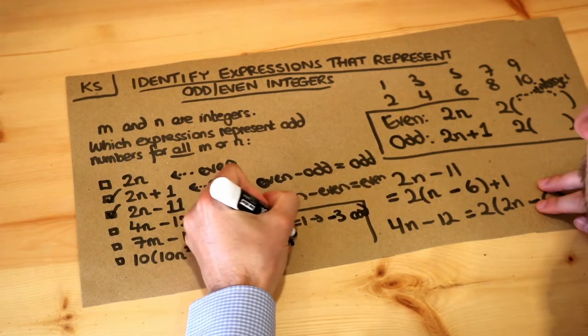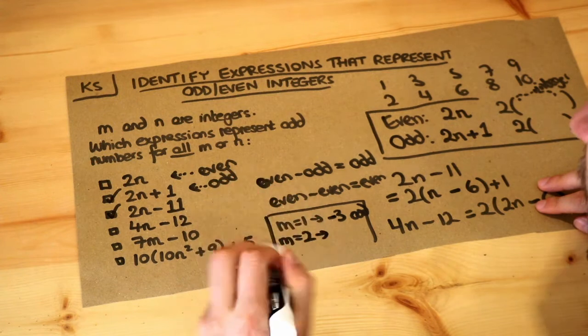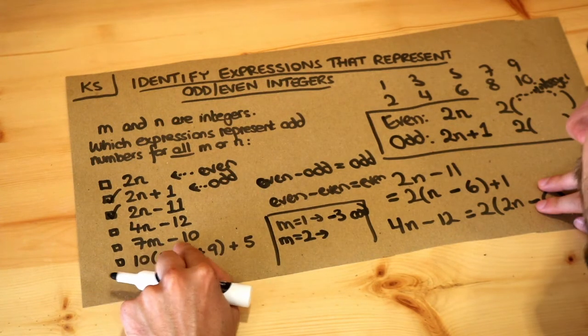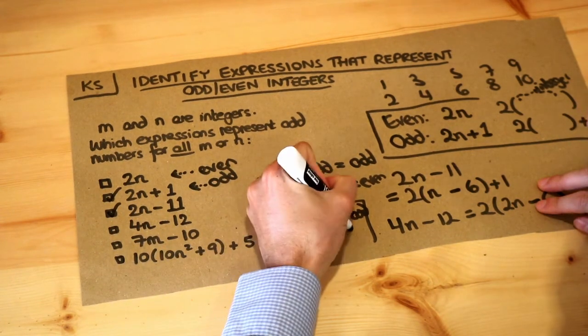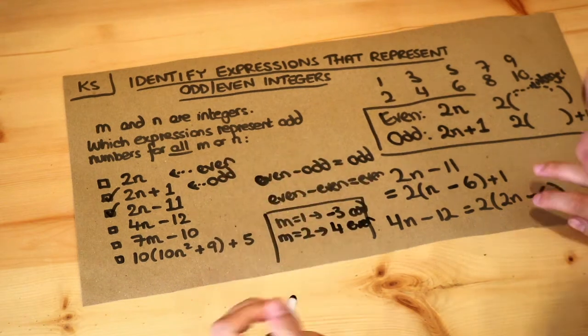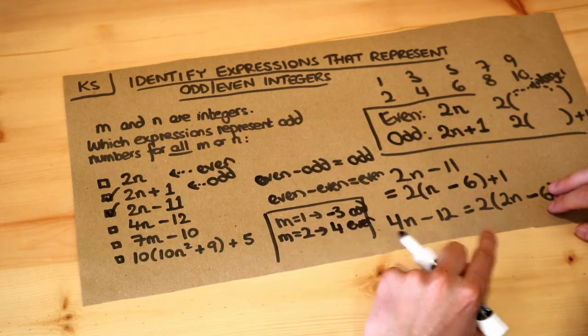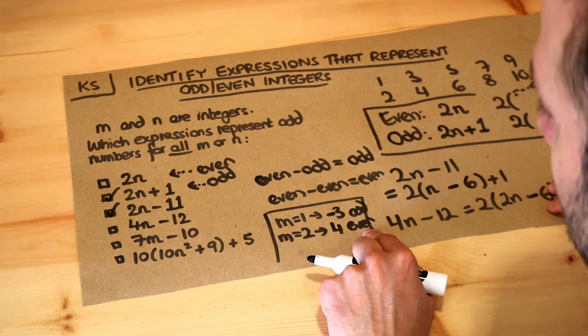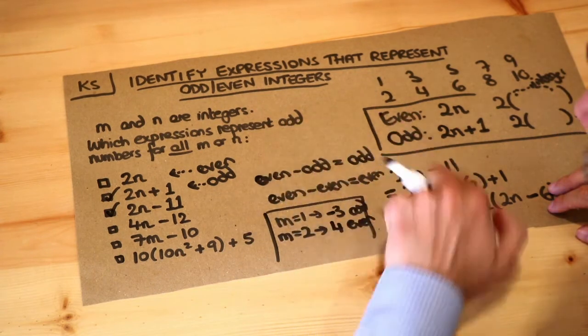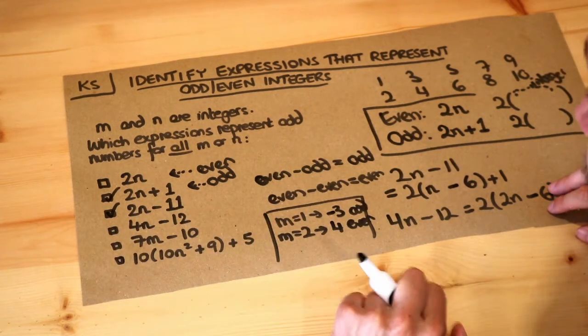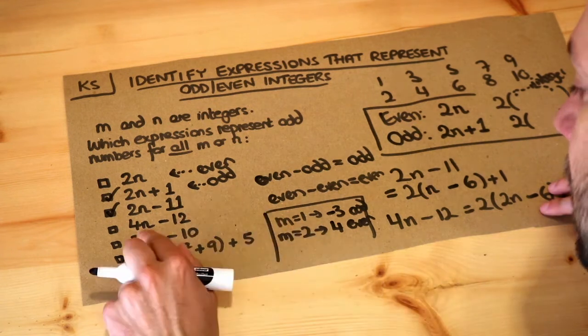But if you made m equals 2, then 7 times 2 is 14 minus 10 is 4, which is clearly even. So depending on what m was, we might end up with an odd or even integer. So therefore we can't guarantee that it's going to be odd because we want to look for the expressions which are guaranteed to be odd. So that one's definitely not right.